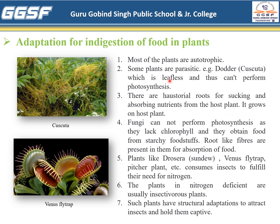An example of parasitic plants is dodder, also called cuscuta. The roots of these plants are haustorial roots, used for sucking and absorbing nutrients from the host plant. Now let's move toward fungi. Fungi appear as white cotton-ball-like growth. They do not have chlorophyll and cannot perform photosynthesis. Fungi obtain food from starchy foodstuff like bhakri and bread, and they have root-like fibrous structures for absorption of food.